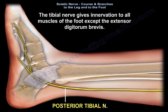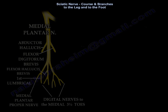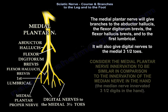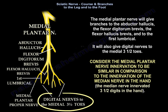The tibial nerve gives innervation to all muscles of the foot except the extensor digitorum brevis. The medial plantar nerve gives branches to the abductor hallucis, the flexor digitorum brevis, the flexor hallucis brevis, and to the first lumbrical. It also gives digital nerves to the medial three and a half toes. Consider the medial plantar nerve innervation like the median nerve.